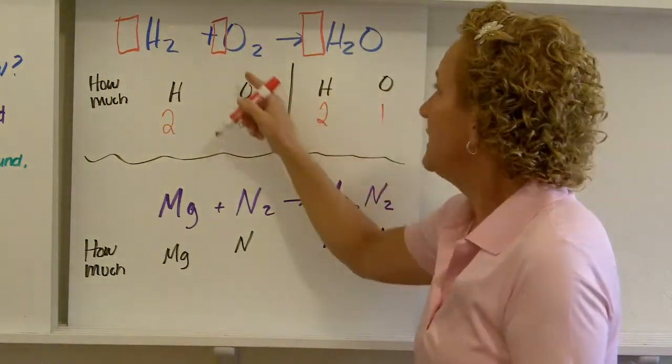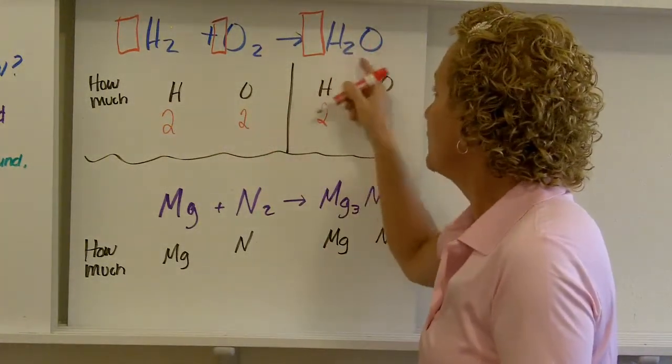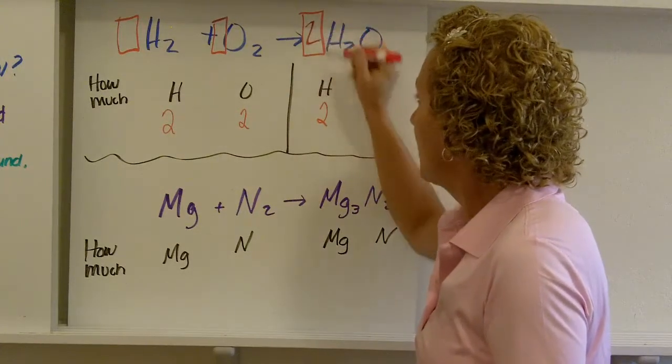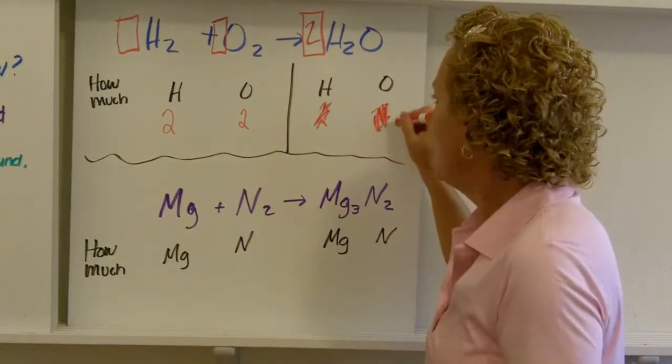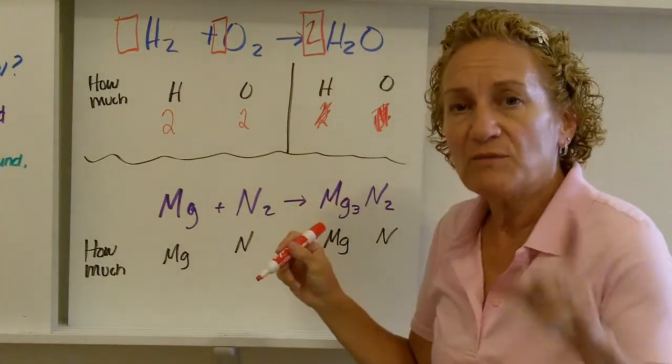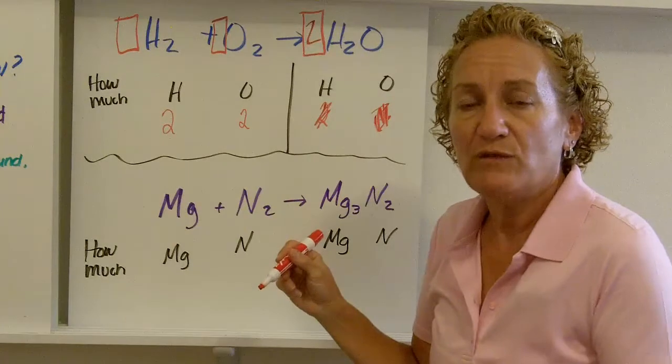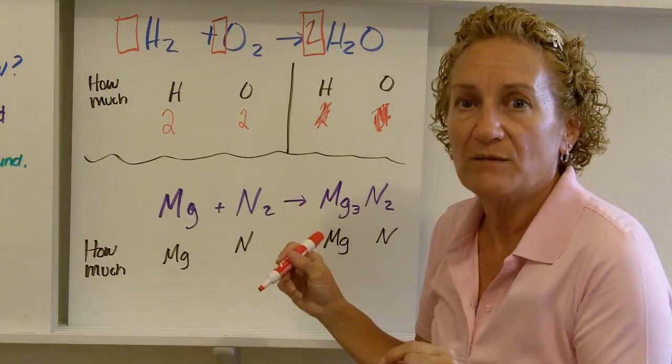So if I need this to be two oxygens, I can put a two right here. Now I need to change some things. You have to be pretty good at counting atoms. If you're not good at counting atoms, go back and rewatch the counting atoms video. Very important that you can count atoms in order to do this.